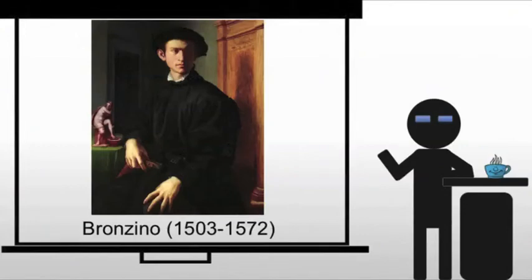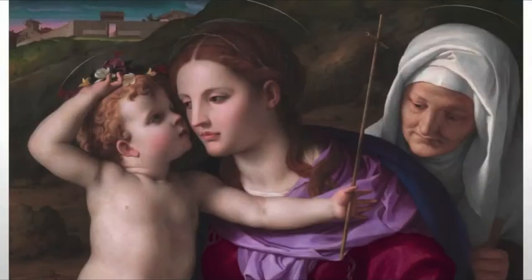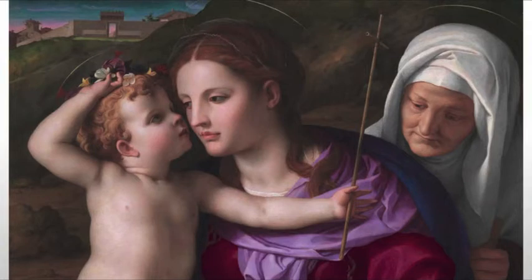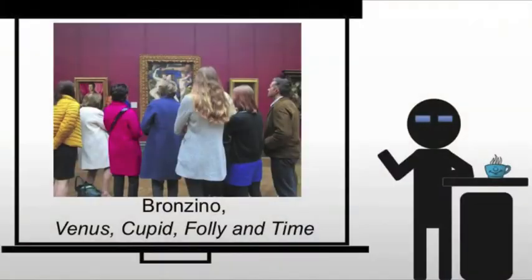Next, we have Bronzino, and he's known for this very accurate sort of style. He's going to be elongating forms and working in the Mannerist style once again, and he famously paints the Venus, Cupid, Folly, and Time.